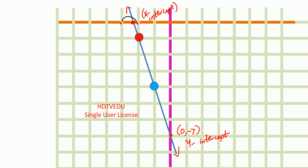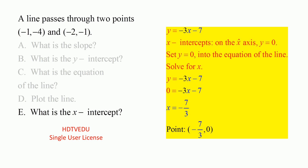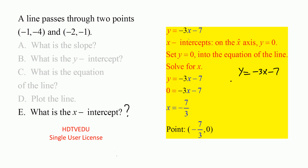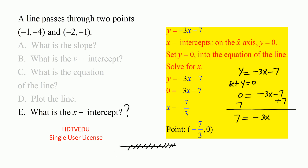The x-intercept appears to be somewhere between negative 2 and negative 3. To find the exact point, we use the equation of the line and substitute y equals 0, because on the x-axis y is always equal to 0. Part e: set y equal to 0 in y equals negative 3x minus 7. You get 0 equals negative 3x minus 7. Add 7 to both sides and you get 7 equals negative 3x.